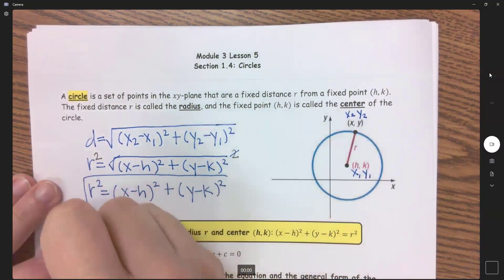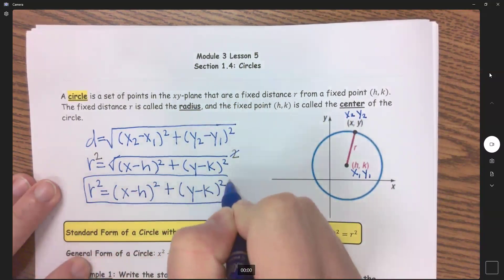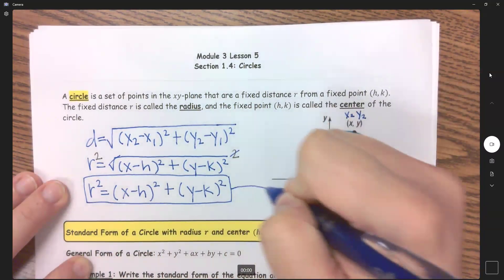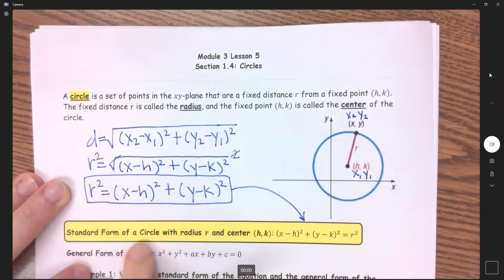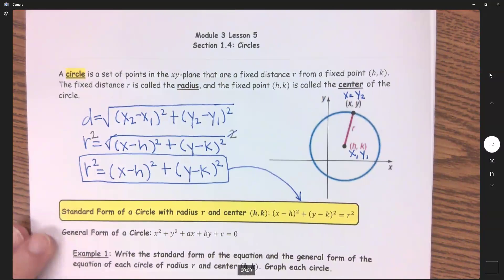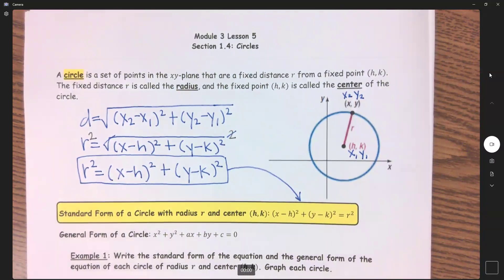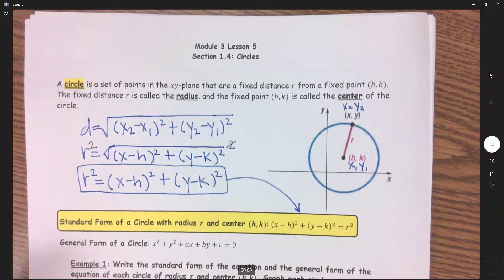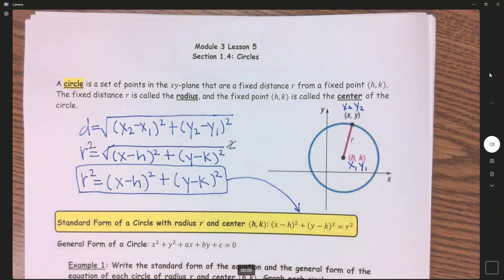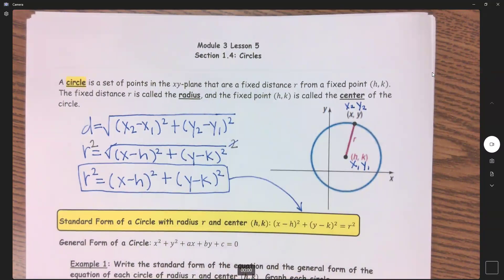And this right here, if you notice, is my standard form of a circle with a radius r and a center h,k. So continuing on to next video, I'm going to try to explain this a little bit better, and then we will get into example 1.